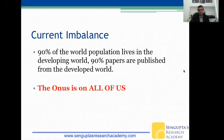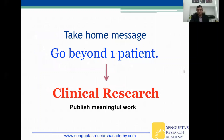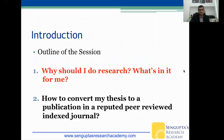Remember that currently there is an imbalance: 90% of the world population lives in the developing world where we are, yet 90% of papers are published from the developed world. The onus is really on us to set this right. The key message from the first part of the talk is that research helps you go beyond one patient at a time — so do good clinical research and publish meaningful work.